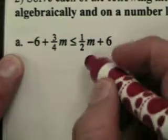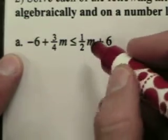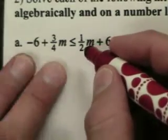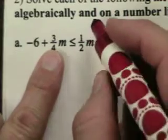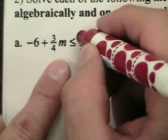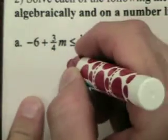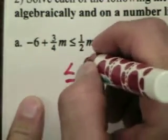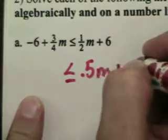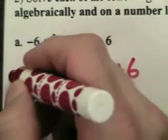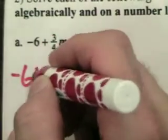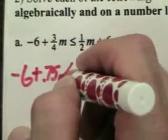On this one, I'm going to add a half of an m. I'm going to see, what's another way to write one half that'll work with three-fourths? I know that I can use some fraction knowledge or change them to a decimal. So I think I might just change them to a decimal. I'm going to say this is less than or equal to 0.5m plus 6, and this side is negative 6 plus 0.75m.